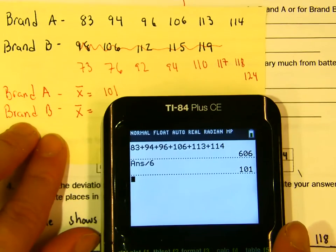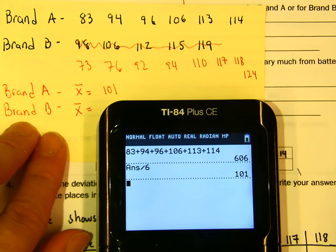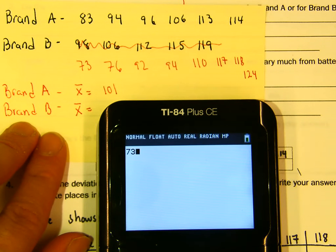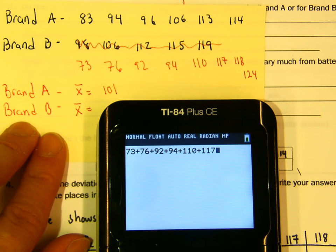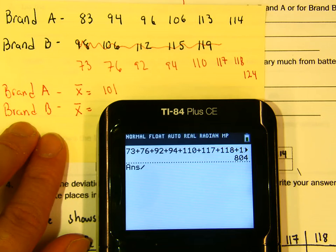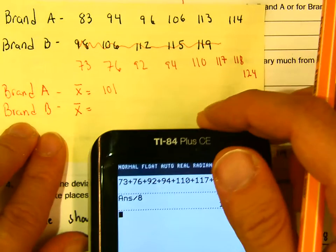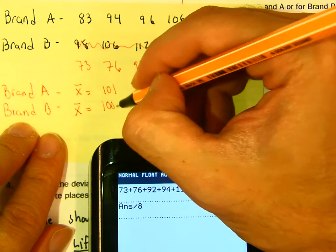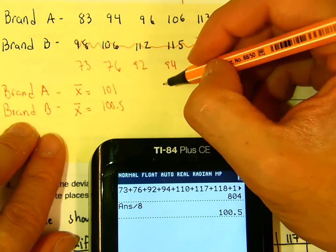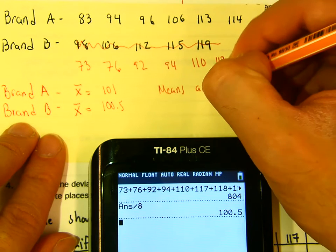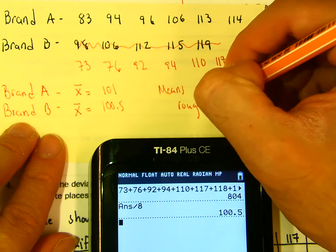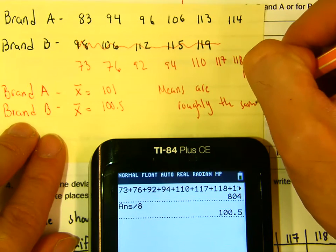For brand B: 73 + 76 + 92 + 94 + 110 + 117 + 118 + 124, divided by 8, gives us x̄ = 100.5. So it looks like the means are roughly the same for both brands.